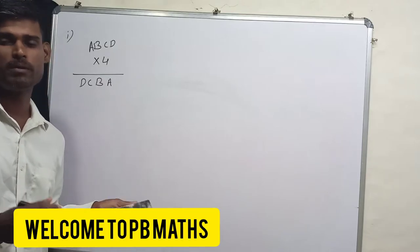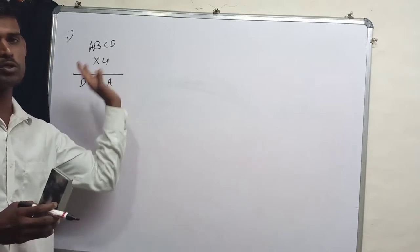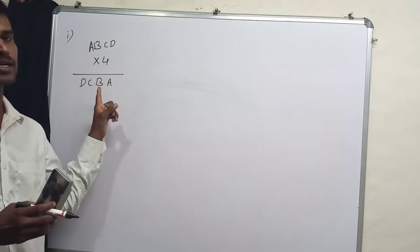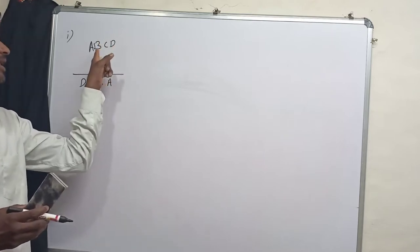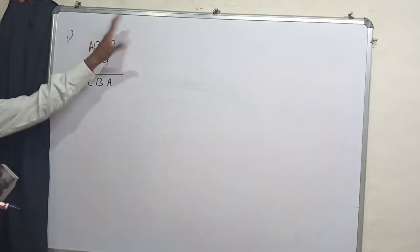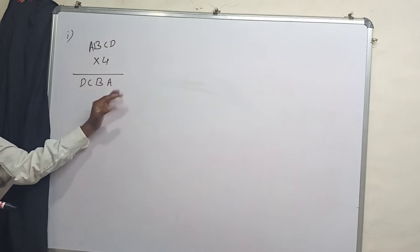Hello everyone, welcome to PB Maths. Today in this video I am going to solve a puzzle which is based on cryptarithmetic. Look at here, there is a question: ABCD into 4 is equals DCBA.